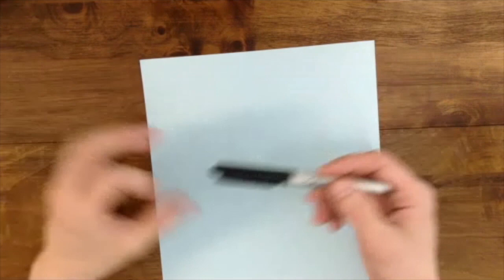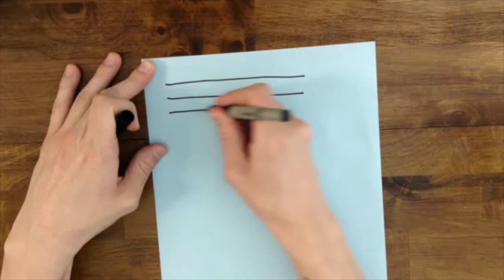Alright guys, the moment you've all been waiting for, drawing the treble clef. So first thing you'll need is some staff paper, but if you don't have that, that's alright. You can just draw five horizontal lines on some blank paper. One, two, three, four, five.